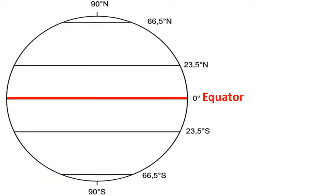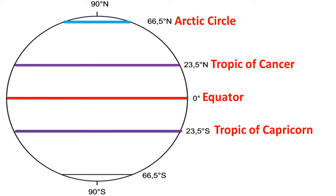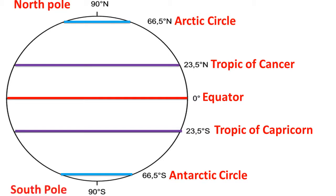A line of latitude located at 23 and a half degrees north of the equator is known as the Tropic of Cancer. A line of latitude located at 23 and a half degrees south of the equator is known as the Tropic of Capricorn. A line of latitude located at 66 and a half degrees north is called the Arctic Circle. The areas above the Arctic Circle and the North Pole, and Antarctic Circle and the South Pole, are known as polar regions.